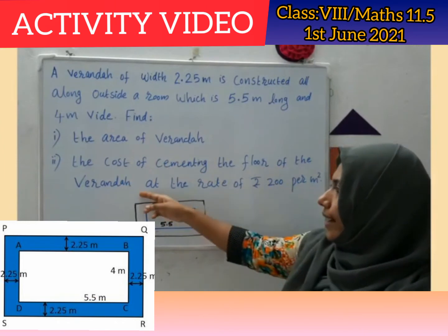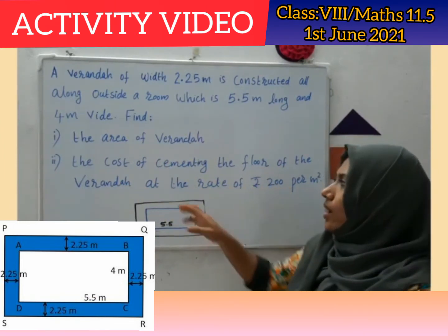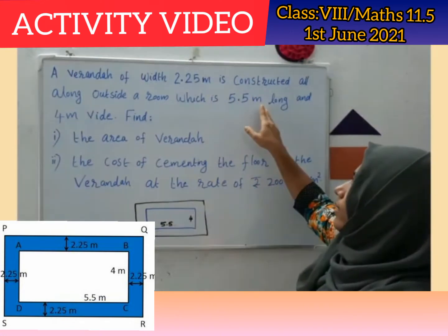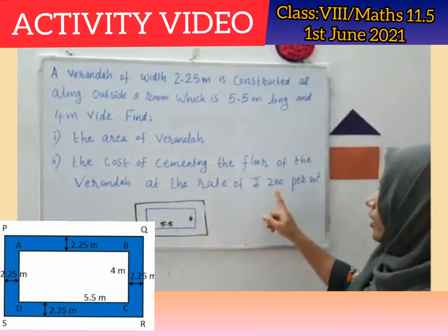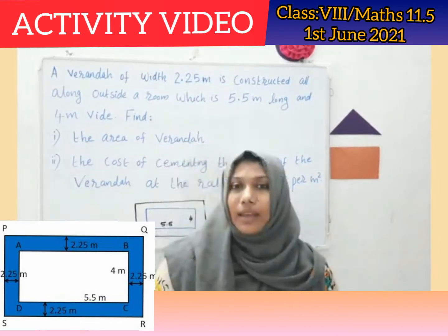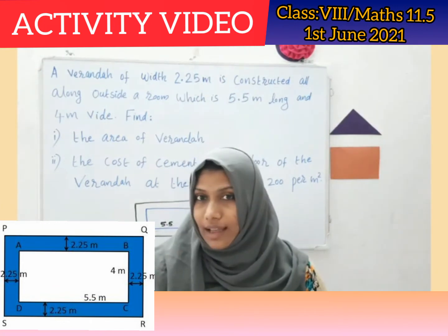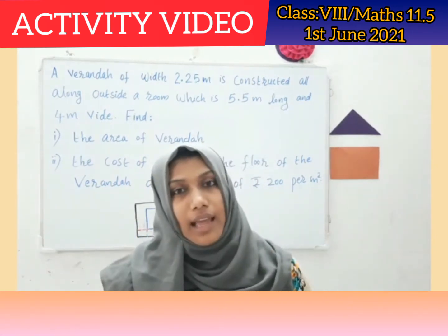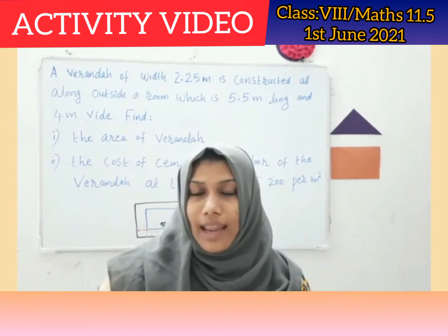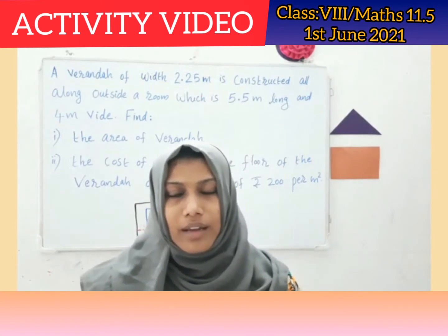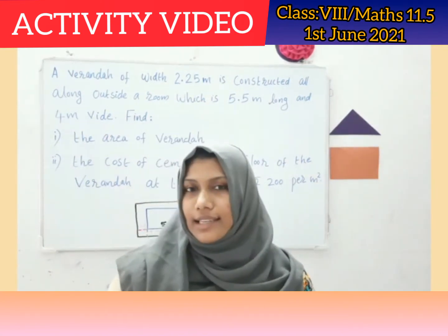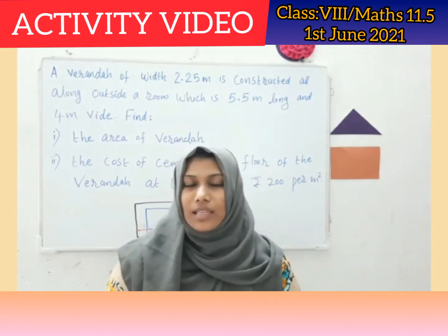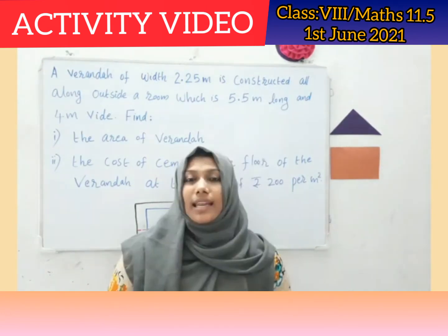The cost of cementing the floor of the veranda is at the rate of rupees 200 per meter square. When we find the area we get the measurement in meter square, because the units given are in meters, and for 1 meter square the cost is 200 rupees. Cementing the floor is related to the concept of area. Similarly, tiling the floor and cleaning the floor are also related to area. Polishing the floor is also related to area. Pointing the tiles is an example of perimeter, because pointing relates to the border of tiles.